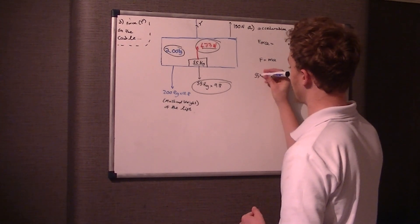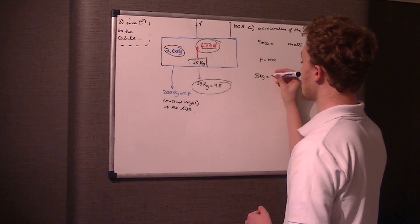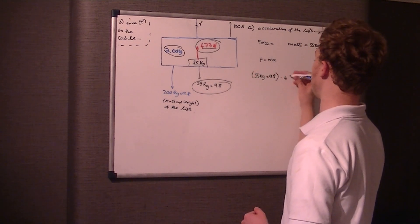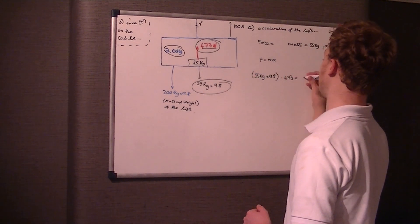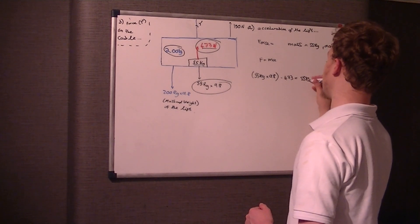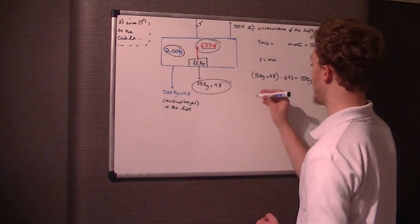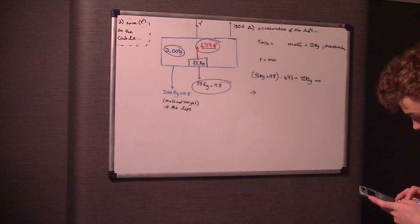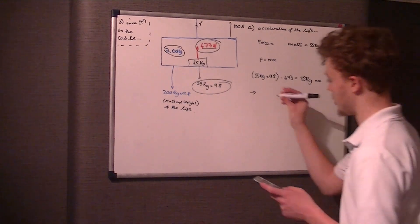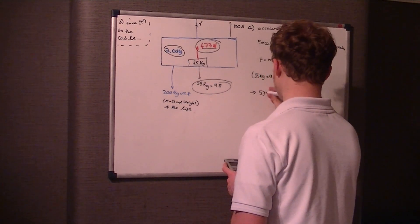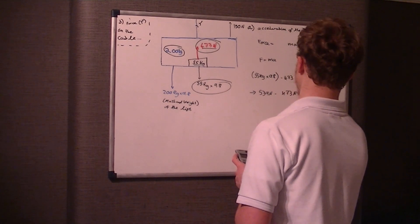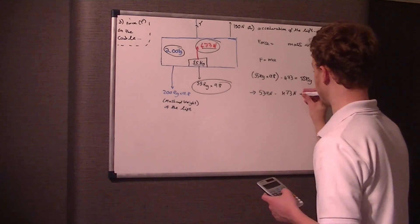So it's 55 times 9.8, take away the reaction force. If you do 55 times 9.8 in your calculator you get 539 newtons, and 539 take away 473 is equal to 55 kilograms times acceleration.